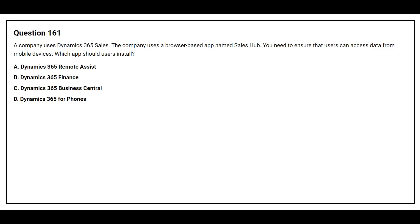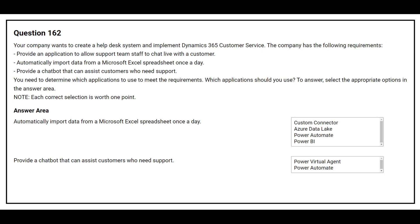Question 161: A company uses Dynamics 365 Sales. The company uses a browser-based app named Sales Hub. You need to ensure that users can access data from mobile devices. Which app should users install? Option A: Dynamics 365 Remote Assist. Option B: Dynamics 365 Finance. Option C: Dynamics 365 Business Central. Option D: Dynamics 365 for Phones. The correct answer is Option D: Dynamics 365 for Phones.